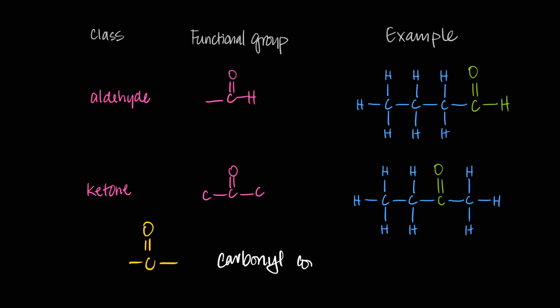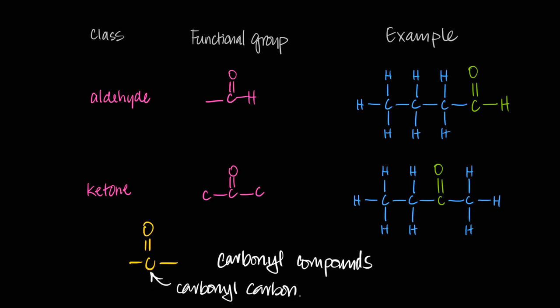A C double bonded to an O is called a carbonyl carbon. Aldehydes and ketones both have that. The difference is aldehydes have an H while ketones have a carbon on either side. The reason they're named differently is that their reactions are quite different. There are many reactions that an aldehyde undergoes that a ketone does not, specifically because of the extra H on the carbonyl carbon.